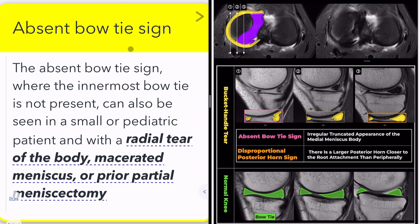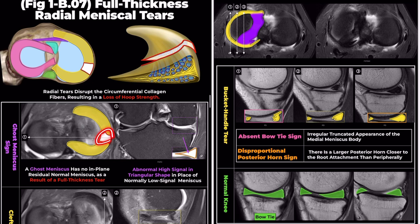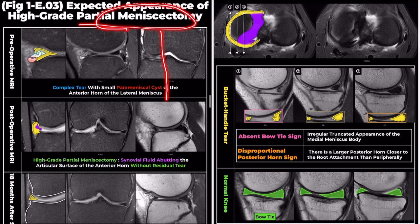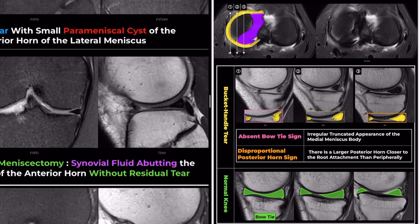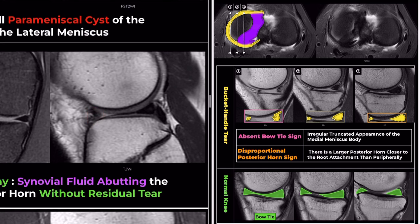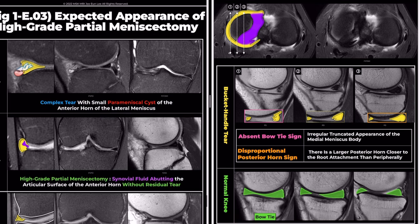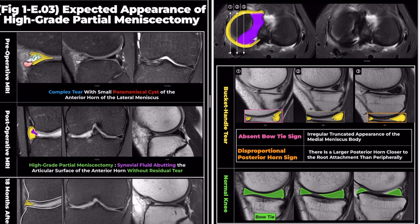In bucket-handle tears, such as this one, the meniscus shows displacement toward the intercondylar notch, the innermost bow-tie is not visible, and the anterior and posterior horns appear irregular and truncated. This patient's images mimic the absent bow-tie sign, attributed to a full-thickness radial tear. The next case, where the patient underwent a partial meniscectomy resulting in a markedly small anterior horn, also resembles the absent bow-tie sign. Therefore, the absent bow-tie sign can be considered a nonspecific finding.